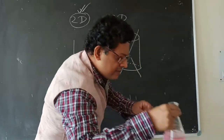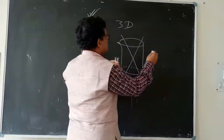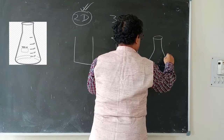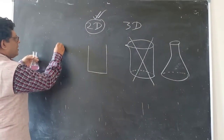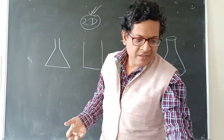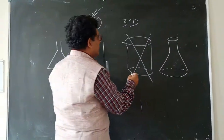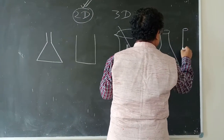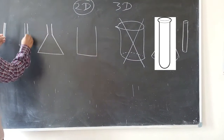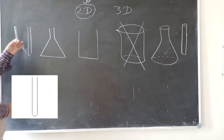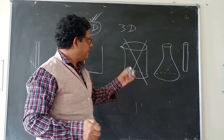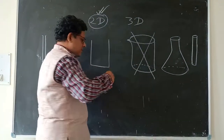Take another example — a conical flask. In 3D, we draw it one way, but in 2D, we simply draw it. Similarly, a test tube: if I draw the test tube in 3D, it looks like this. But in 2D, I can simply draw it in a straightforward way. Always try to draw in 2D.